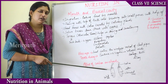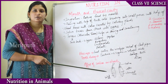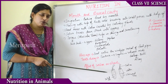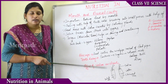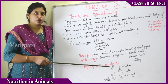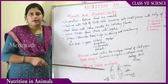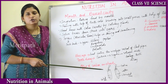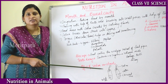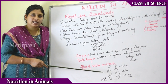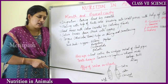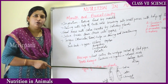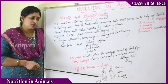Take two test tubes and fill both with water. In the first test tube, add boiled and cooked rice. In the second test tube, add boiled and chewed rice. The chewed rice is broken down into small pieces with the help of teeth and mixes with the saliva. Then start adding iodine drop by drop into both test tubes.